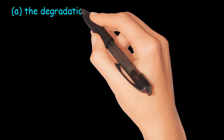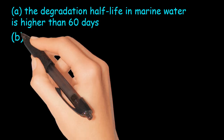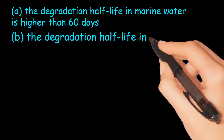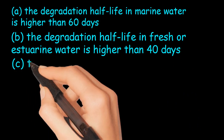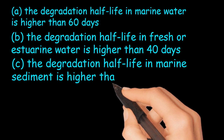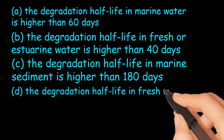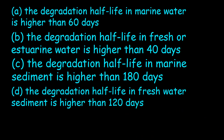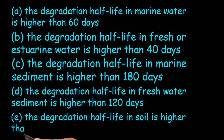A substance is persistent if it meets the following criteria: A) The degradation half-life in marine water is higher than 60 days. B) The degradation half-life in freshwater or estuarine water is higher than 40 days. C) The degradation half-life in marine sediment is higher than 180 days. D) The degradation half-life in freshwater sediment is higher than 120 days. E) The degradation half-life in soil is higher than 120 days.